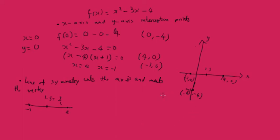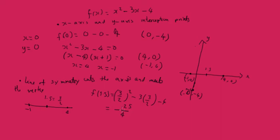So 1.5 will be the x-coordinate of the vertex. Let's find f of 1.5. We put it in as a fraction: (3/2) squared minus 3 times (3/2) minus 4, which gives us minus 25 over 4. So the vertex is at (3/2, −25/4).